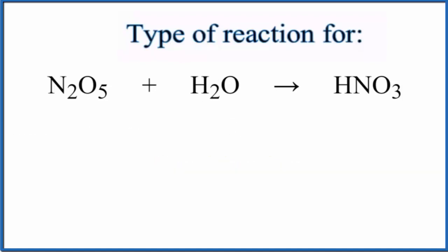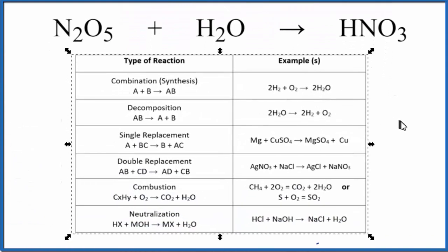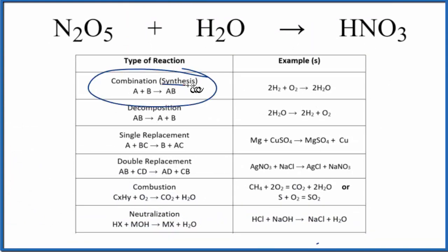We can look at a table of general types of chemical reactions. Here is the combination, also called synthesis. We have A plus B gives us AB. You could consider this substance A plus substance B and we end up with substance AB. That's a combination or synthesis reaction.